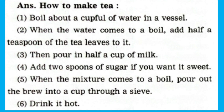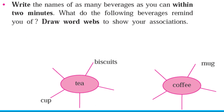Here is how to make tea step by step: One, boil about a cup of water in a vessel. Two, when the water comes to a boil, add half a teaspoon of tea leaves to it. Three, pour in half a cup of milk, then add two spoons of sugar if you want it sweet. Four, when the mixture comes to a boil, pour the brew into a cup through a sieve. Last step: drink it hot.